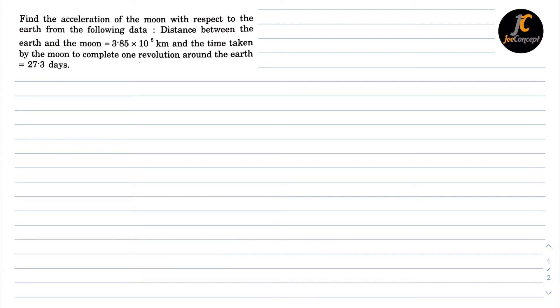First of all we can find the angular velocity omega, that is 2π divided by T. The time period of the revolving moon around the earth is 27.3 days. So omega is 2π upon 27.3 days, converted to seconds: multiplied by 24 hours, 60 minutes, and 60 seconds. This gives omega in radians per second.